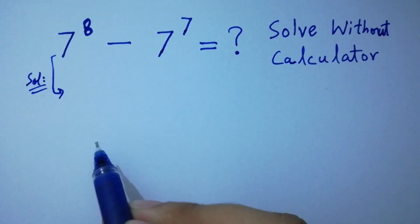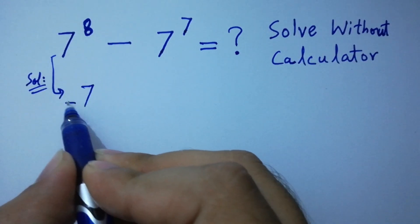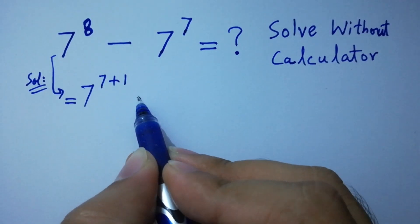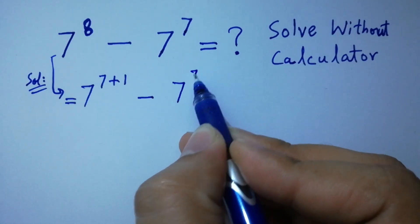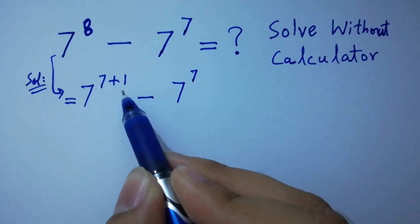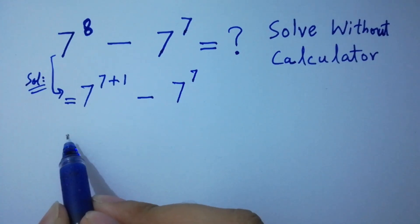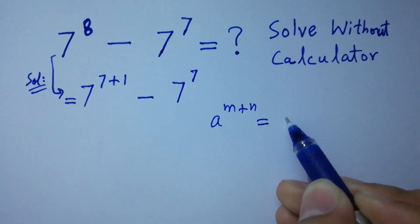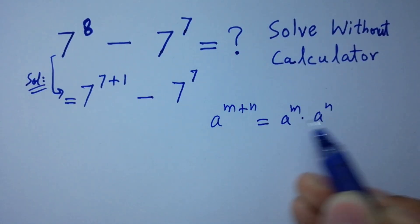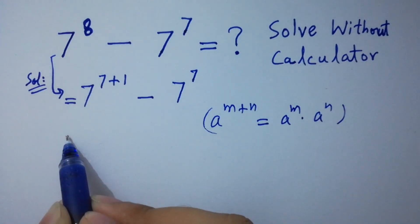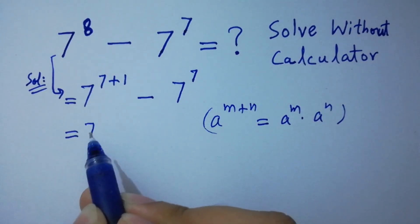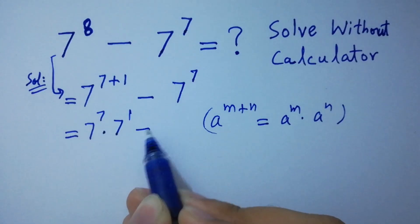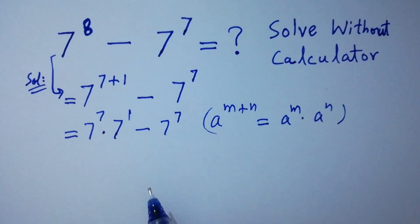It can be written as 7 to the power 7 plus 1 minus 7 to the power 7. Since 7 plus 1 is 8, and as we know a to the power m plus n equals a to the power m times a to the power n, then it will be 7 to the power 7 times 7 to the power 1 minus 7 to the power 7 as it is.